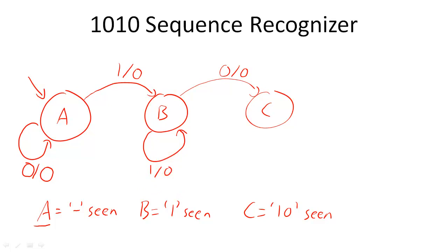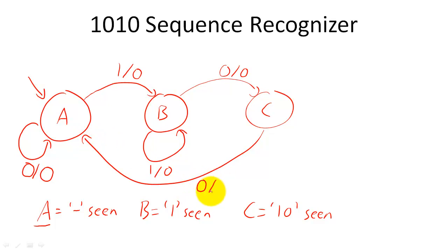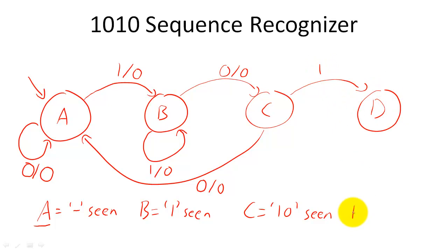For the third state, if we receive a 0, our sequence no longer matches any part of our desired input sequence, so we will transition back to the start state. If we receive a 1, we have received the third bit of our desired input sequence, so we transition to a new state that records that we have seen 3 bits of our desired input sequence, but we still have not seen our desired input sequence.